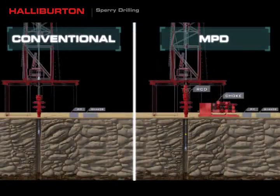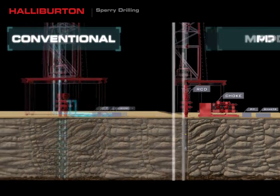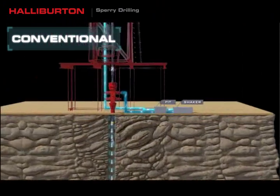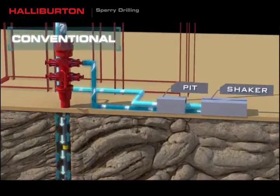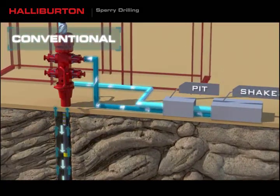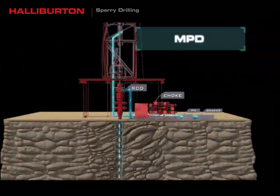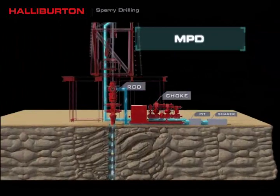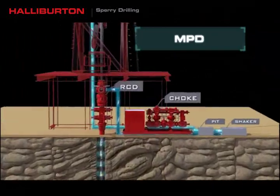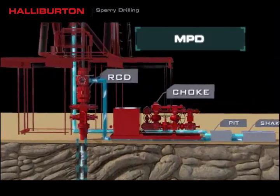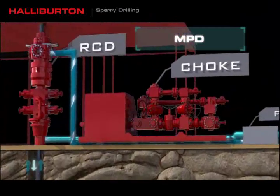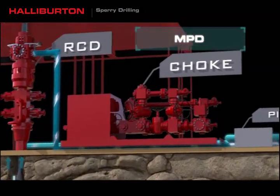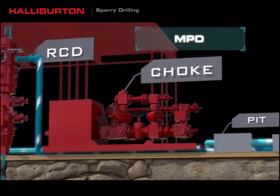In overbalanced drilling, the wellbore is open to the atmosphere and drilling fluids flow freely across the shaker to the return pit. The managed pressure drilling solution creates a closed loop system — a managed environment that allows precise control of bottom hole pressure and timely detection and mitigation of kicks and mud losses.